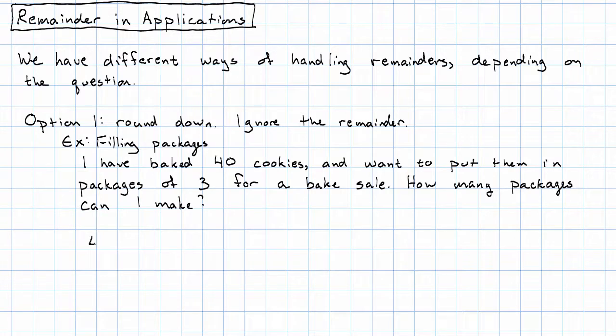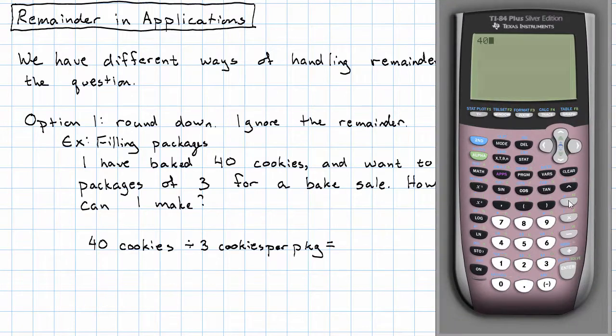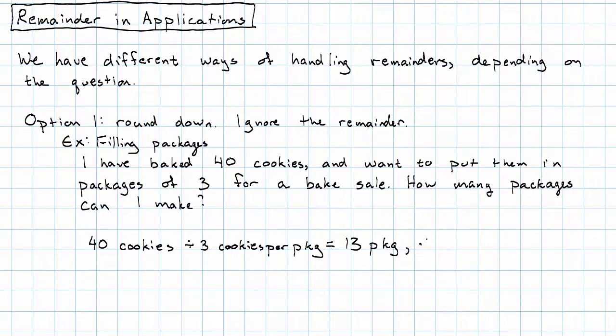Well, I have 40 cookies divided by 3 cookies per package. 40 divided by 3 is 13 point something. So I get 13 packages and some number of cookies left over. I could go through the process that we saw for finding out what the remainder is, but that's not necessary for this question, right? Because I just want to know how many packages I can make.